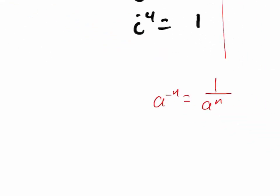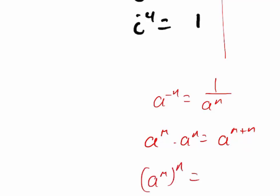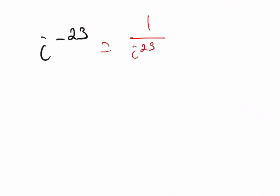I also know that A to the m times A to the n is equal to A raised to the m plus n, and that A to the n power raised to another power means A raised to m times n. So I'm going to separate i to the 23rd into i to the 22nd times i to the 1st.